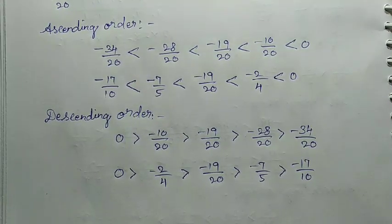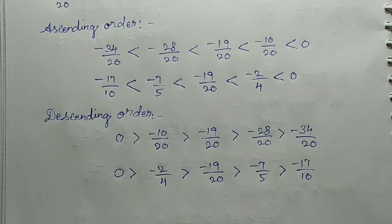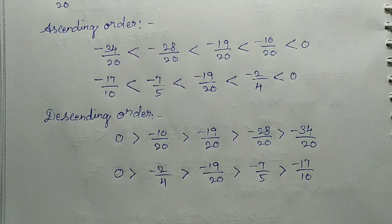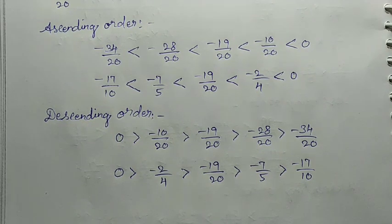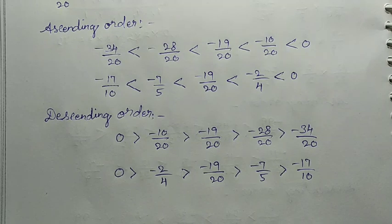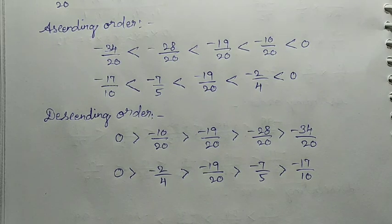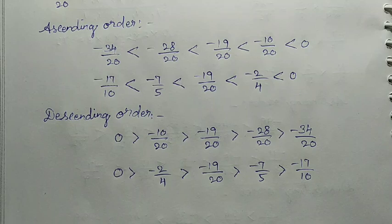Okay. So if you compare the rational numbers and arrange them in ascending and descending order, that is how you do it. Thank you.